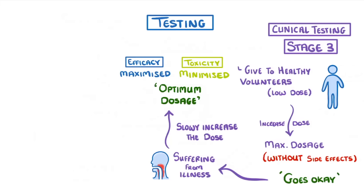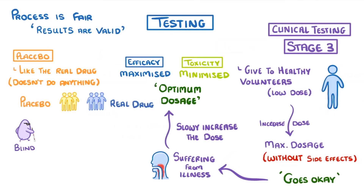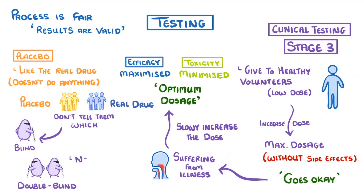The last thing we need to talk about is how we can ensure that the process is fair and the results we find are valid. To achieve this, clinical trials should be blind and use a placebo. A placebo is a substance that is just like the real drug, but doesn't actually do anything — for example, they often look exactly the same, but are made of sugar instead of any real medication. The most common technique is to give half of the volunteers the real drug and the other half the placebo, but importantly, we don't tell them which they're taking, which is why the trial is blind. Most trials are actually double-blind, where neither the doctors nor the volunteers know which drugs have been taken by whom, until all the results have been analysed at the end of the study.